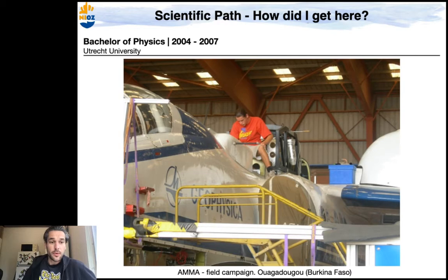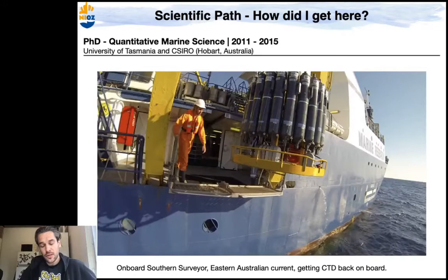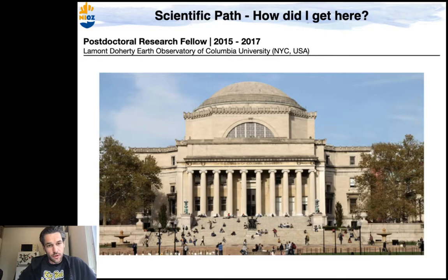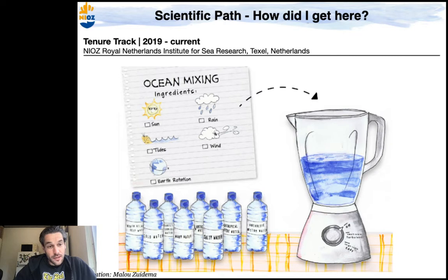How did I get here? I did a Bachelor of Physics at Utrecht University, then a Master in Meteorology, Oceanography and Climate at IMAO and the NEOS Institute. After that I went to Tasmania in Australia to do a PhD in Quantitative Marine Science, working with Trevor McDougall for about three and a half years. Then I went to work with Ryan Abernathy at the Lamont-Doherty Earth Observatory at Columbia University in New York. I did another postdoc in Sydney, and finally landed back on Texel, where I was born and raised, at the NEOS oceanographic institute, where I'm a tenure tracker.